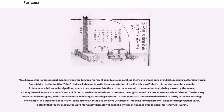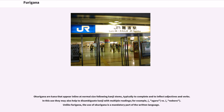A similar practice is used in native fiction to clarify extended meanings. For example, in a work of science fiction, an astronaut could use the word furusato, meaning 'my hometown,' when referring to planet Earth. To clarify that for the reader, the word furusato, hometown, might be written in hiragana over the kanji for chikyu, meaning Earth. Okurigana are kana that appear in line at normal size following kanji stems, typically to complete and inflect adjectives and verbs, and may also help to disambiguate kanji with multiple readings, for example agaru versus nobaru. Unlike furigana, the use of okurigana is a mandatory part of the written language.